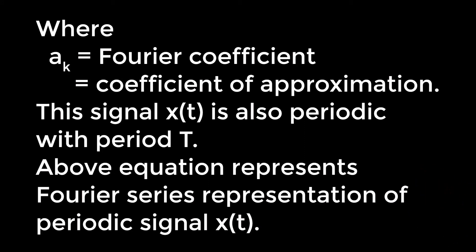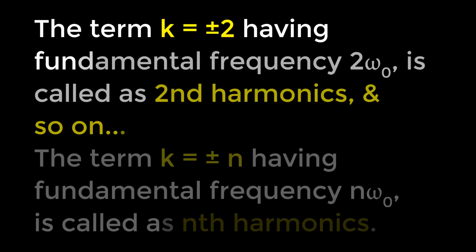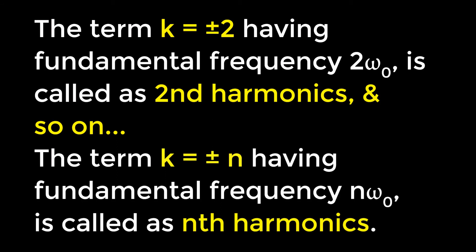The term k = 0 is a constant. The term k = ±1, having fundamental frequency ω₀, is called the first harmonic. The term k = ±2, having fundamental frequency 2ω₀, is called the second harmonic, and so on. The term k = ±n, having fundamental frequency nω₀, is called the n-th harmonic.